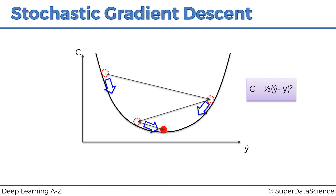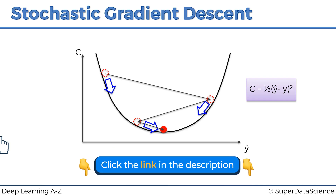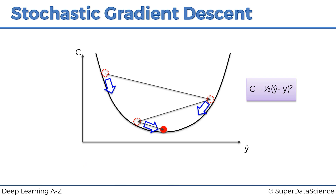But the thing with gradient descent is that this method requires the cost function to be convex, and as you can see here we've specifically chosen a convex cost function. Basically convex means that the function looks similar to what we're seeing now — it's convex in one direction and in essence has one global minimum, and that's the one we're going to find. But what if our cost function is not convex?